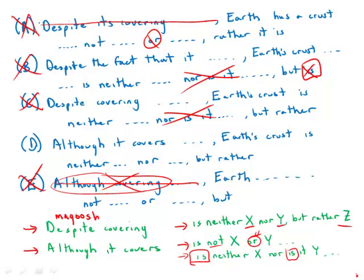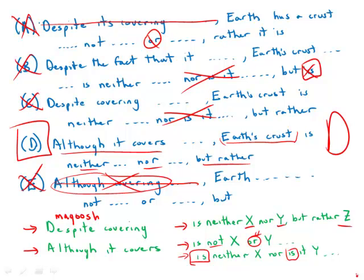So right away that nukes every answer except D. And notice that D has the correct parallel structure, neither nor but rather, perfectly fine. It uses the although clause correctly. It has earth's crust following the modifying phrase. It has no grammatic mistakes whatsoever. It is direct, clear, sleek. It is by far the best answer choice.